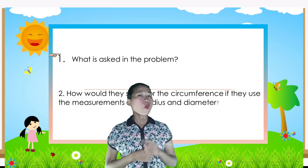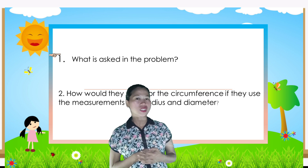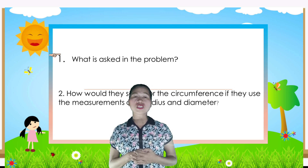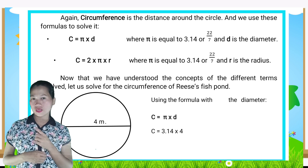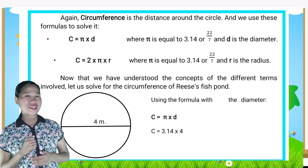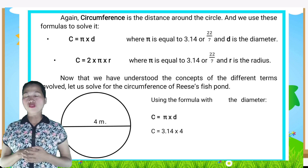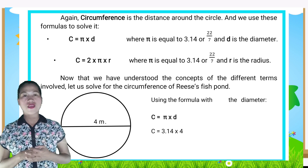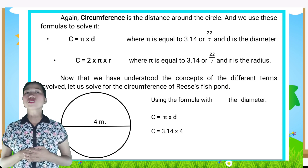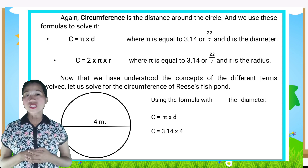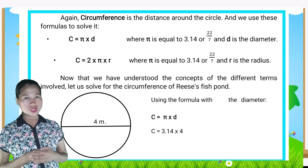Number one: What is asked in the problem? Number two: How would they solve for the circumference if they use the measurements of its radius and diameter? Circumference is the distance around the circle, and we use these formulas: C = π × d, where π = 3.14, and C = 2 × π × r, where π = 3.14 or 22/7.